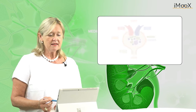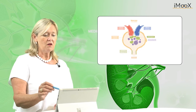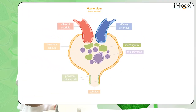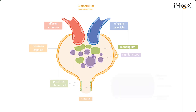Kidneys are the key organs to filter and to excrete substances from blood. They do so in a three-step process. The kidney consists of the glomerulus, which filters small solutes from the human blood.